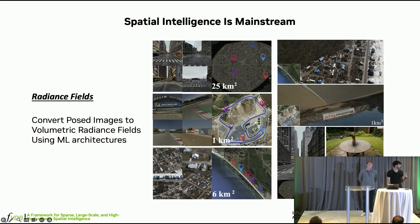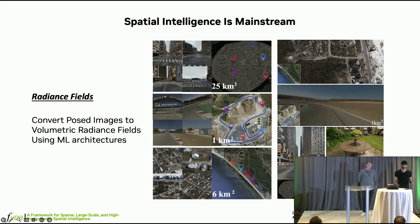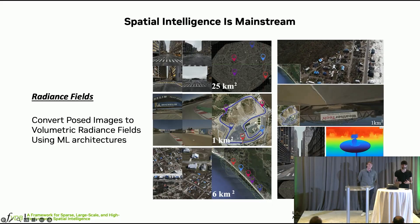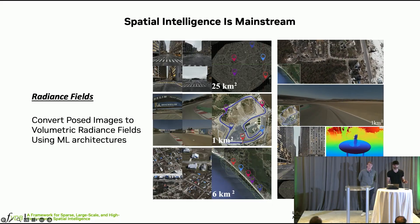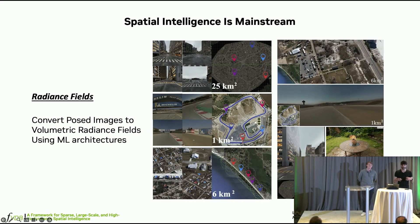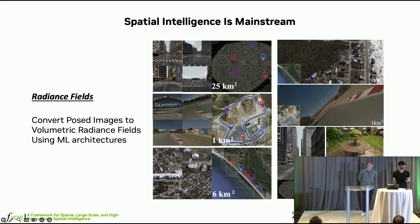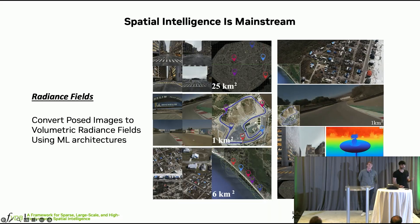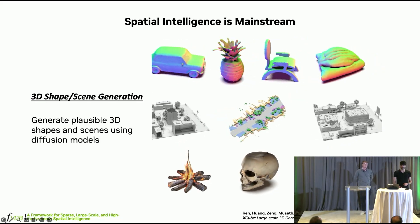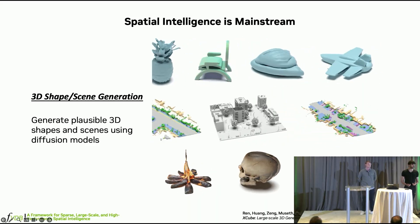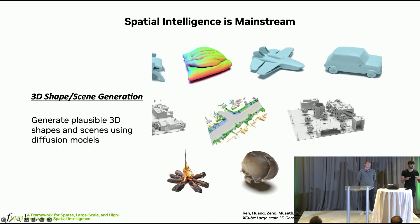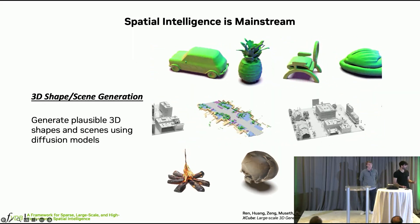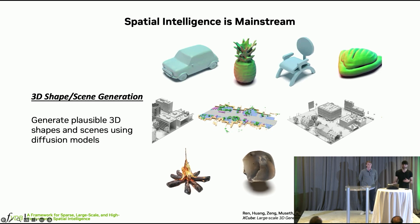Spatial Intelligence is a mainstream area of not only research but also product development. When I say Spatial Intelligence, think of things like neural radiance fields or Gaussian splats, which take a collection of posed images and convert them into a volumetric radiance field that can be rendered from any view. Everything you see here on the left is not actually a video — it's a full-scale photorealistic digital twin. Another thing that should evoke Spatial Intelligence is 3D generative AI — using an AI model to generate shapes and scenes, like content spit out from a diffusion model.